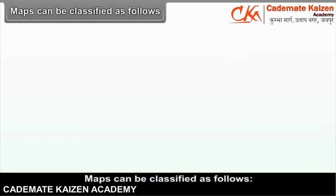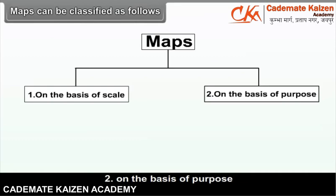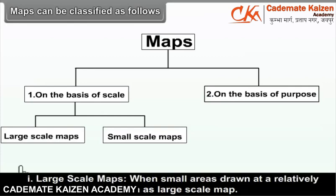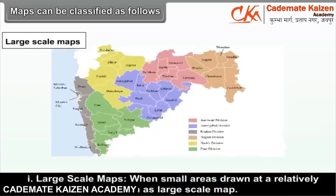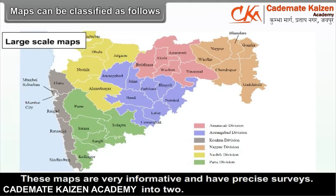Maps can be classified on the basis of scale and on the basis of purpose. On the basis of scale, maps can be classified as large-scale maps and small-scale maps. Large-scale maps: when small areas are drawn at a relatively large scale, it is known as a large-scale map. These maps are very informative and have precise surveys.